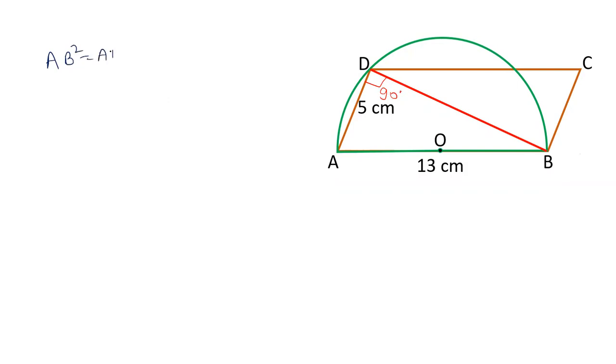AB square is equal to AD square plus BD square. Value of AB is 13. The value of AD is 5. We have to calculate BD. 13 square is 169. 5 square is 25. 169 minus 25 is 144. So the length of BD is under root 144, that is 12 centimeters.